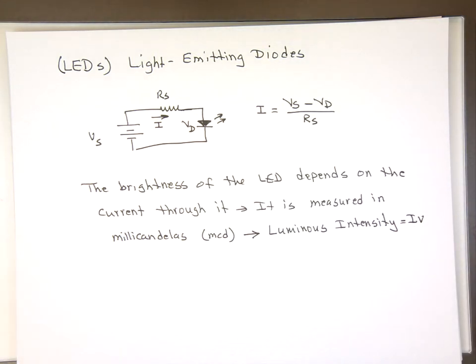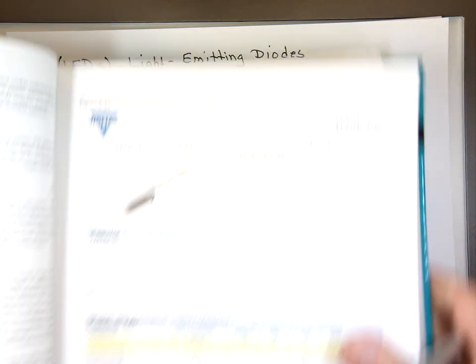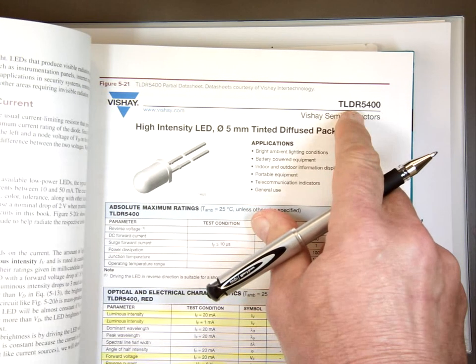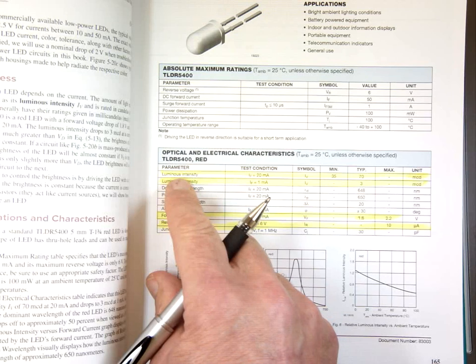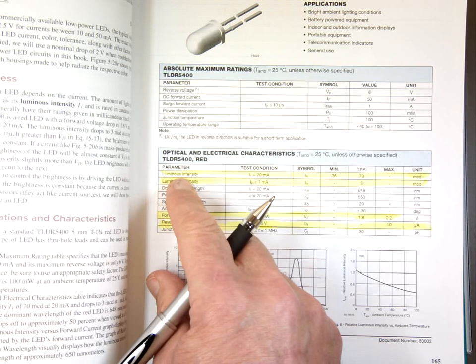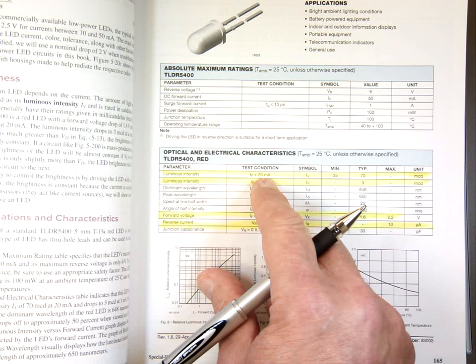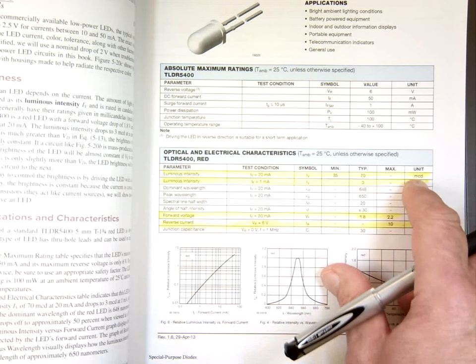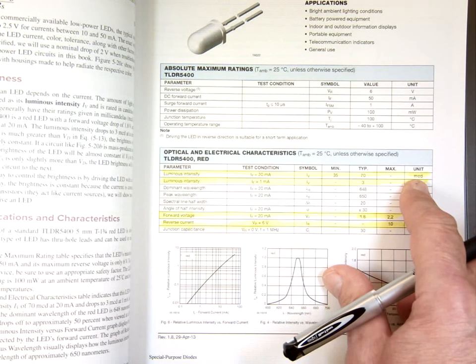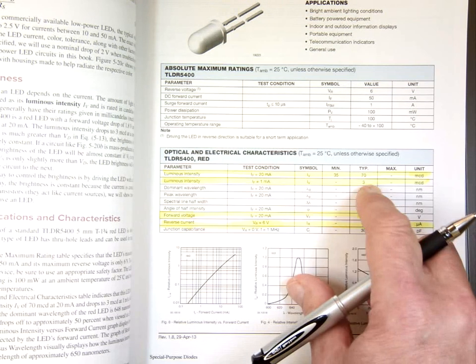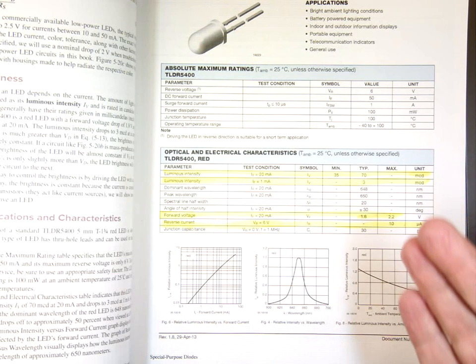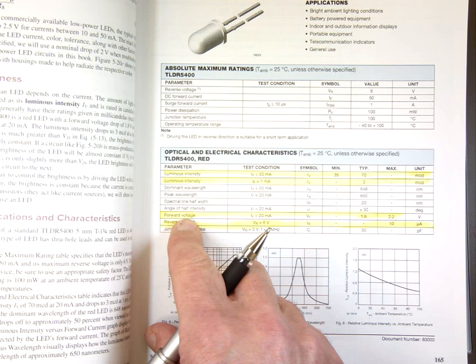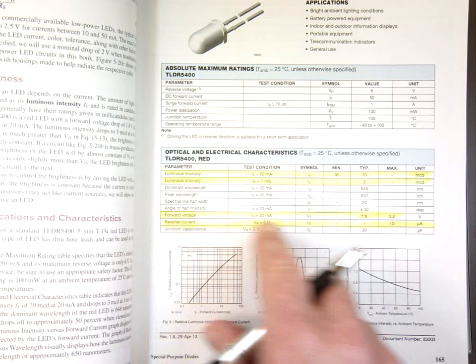So for example, here's our book here. I highlighted one. This is actually for an LED TLDR 5400. And notice here, the luminous intensity. That's the current through it. At 20 milliamp, you have 70 millicandelas. At 1 milliamp, you have 3 millicandelas. For this particular LED actually, the forward voltage, when the thing in forward mode, it's 1.8 volts.